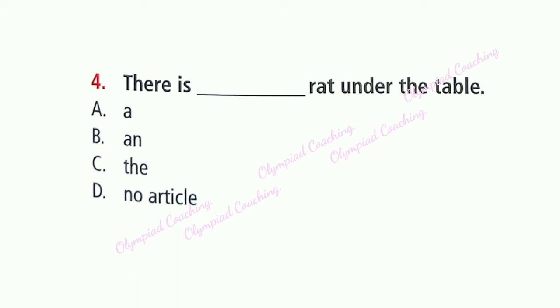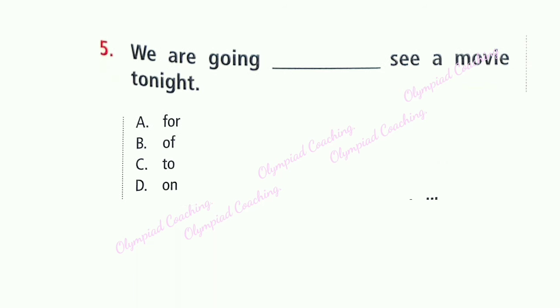Question 4: There is dash rat under the table. Option A is correct: A rat. 'R' is a consonant, so 'a' comes before a consonant.